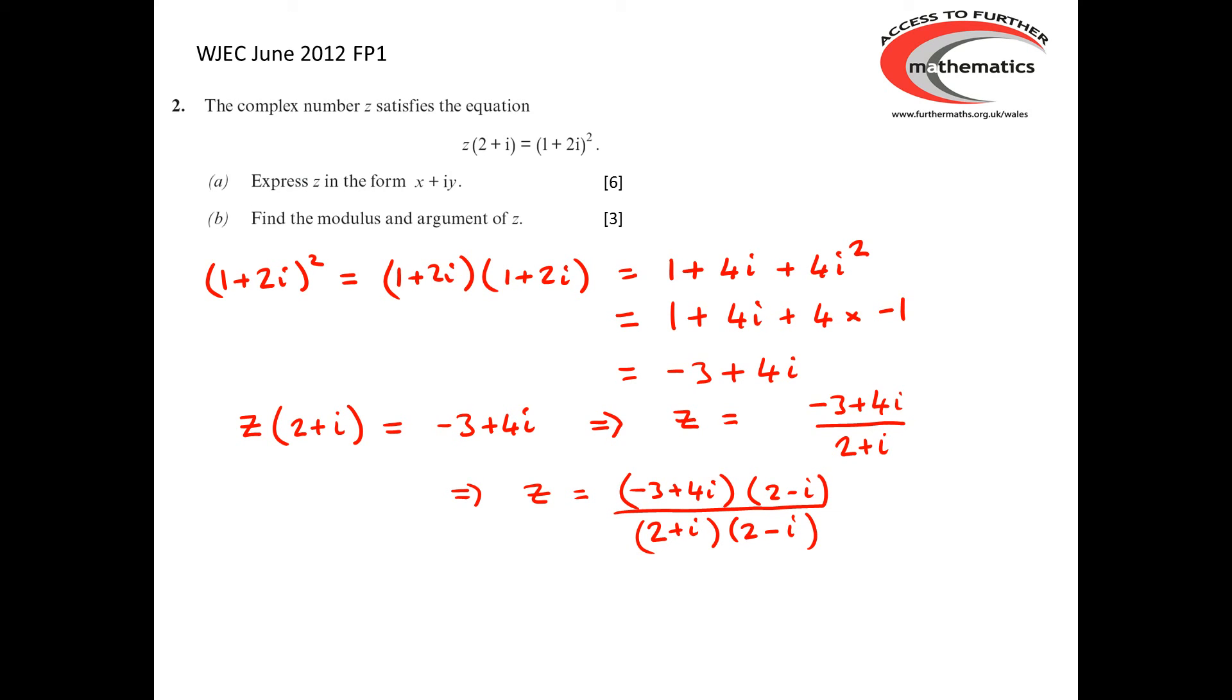And the top, we can expand in our usual algebraic fashion to get -3 times 2 is -6. -3 times -i is +3i. 4i times 2 is 8i. 4i times -i is -4i². And that's all over the 5 that we've already found. 4i² is negative 4, so we've got -6 minus -4, which becomes -2 + 11i on the top and the 5 on the bottom.